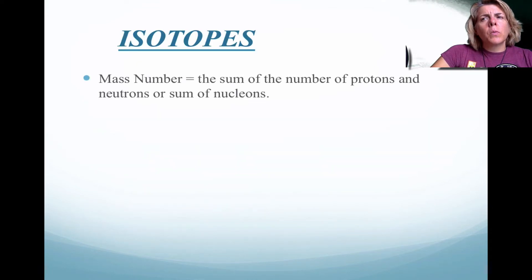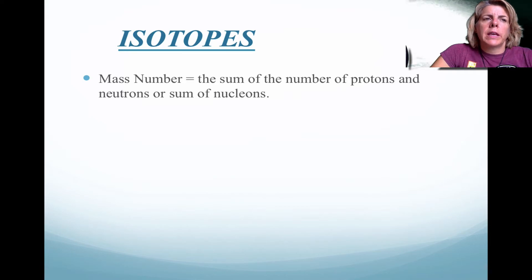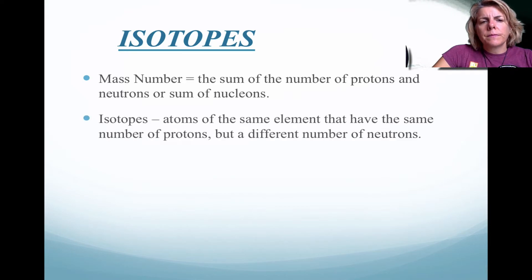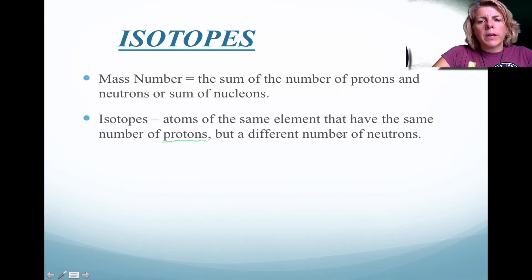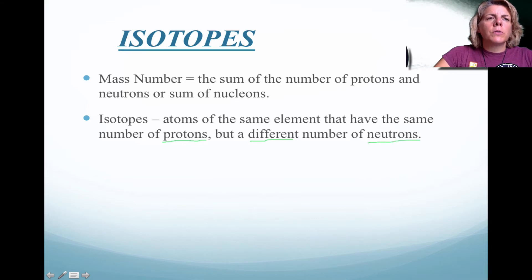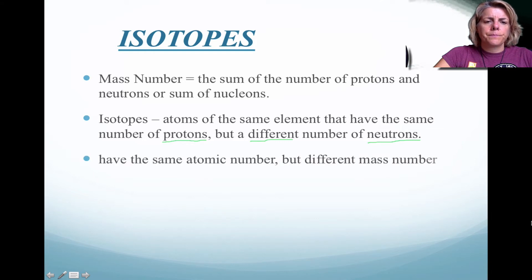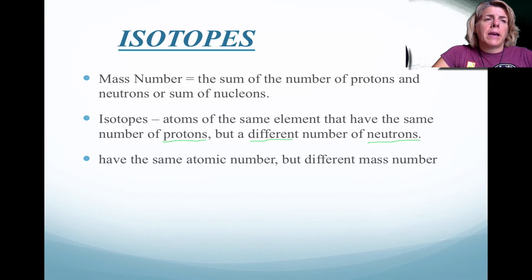When you hear the term mass number, please note that it is the combination of protons and neutrons, or we call them nucleons together. Isotopes — and this is key, a lot of students struggle with this part. When you're looking at isotopes, they share the same number of protons; however, they have a different number of neutrons. So the number of neutrons is always going to be different, but the number of protons is always the same. They will share the same atomic number, however the mass number will be different.